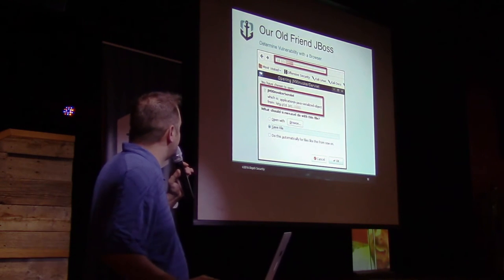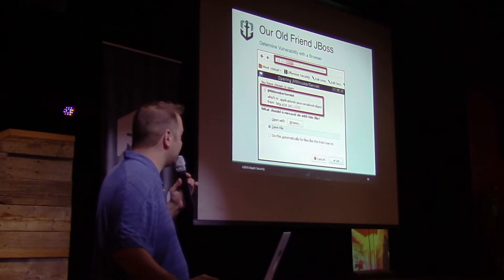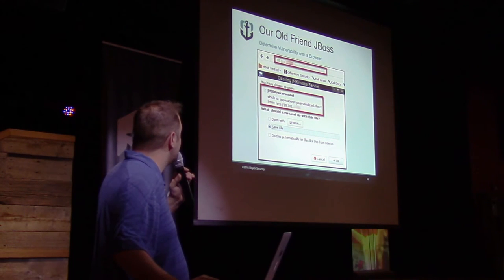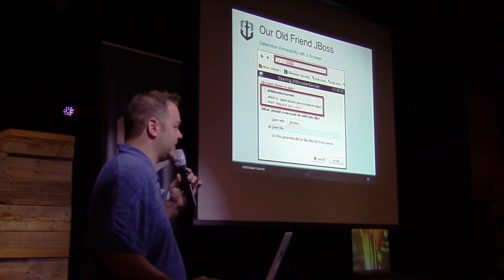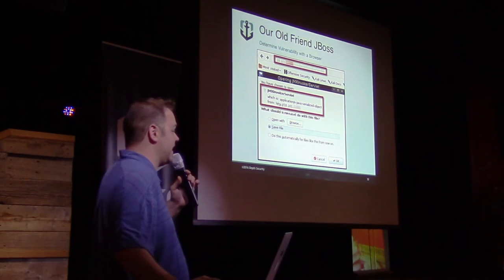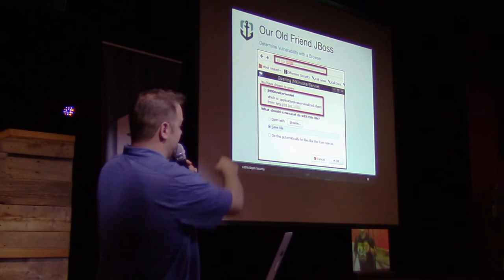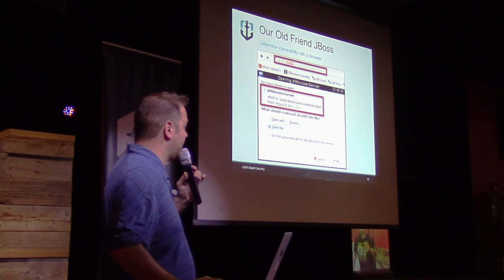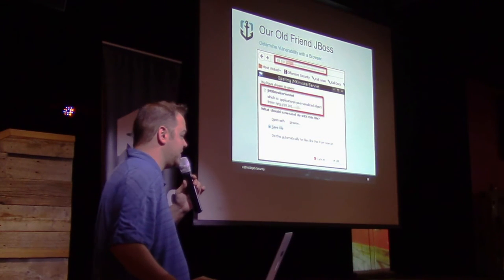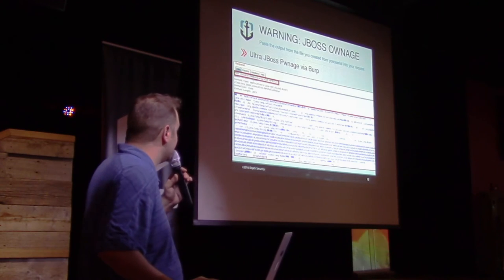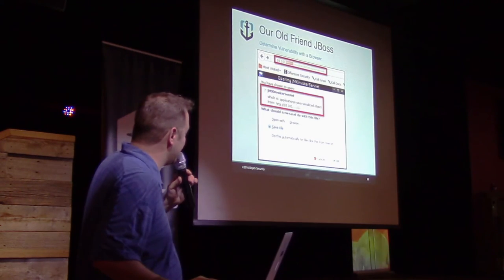Here's how you can find a JBoss instance that's vulnerable as hell. You can literally use a browser to scan for this — just check for this URI, and if it responds to you with an object, then you know that it's vulnerable. That's pretty much it. You don't even have to do port scans. You just look for that.